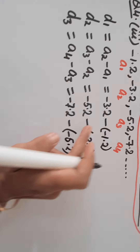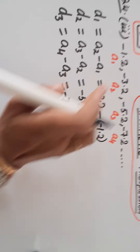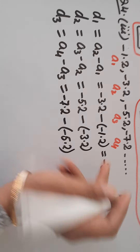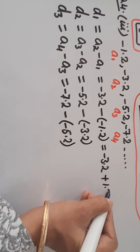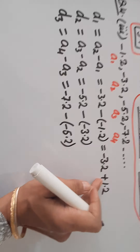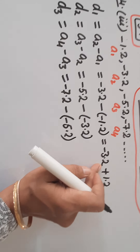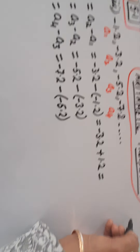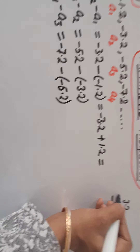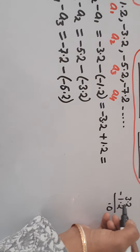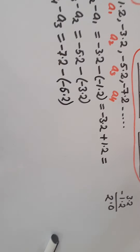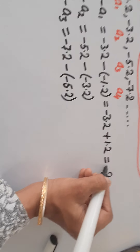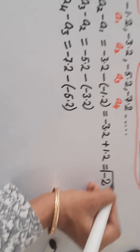This step is very important: the negative sign is from the formula, and the negative sign belongs to the terms. So let us solve: -3.2 minus (-1.2). Plus minus gives minus, so 3.2 minus 1.2. Subtracting: 2 minus 2 is 0, 3 minus 1 is 2, giving 2.0, which is 2. But the greater number is negative, so D1 is -2.